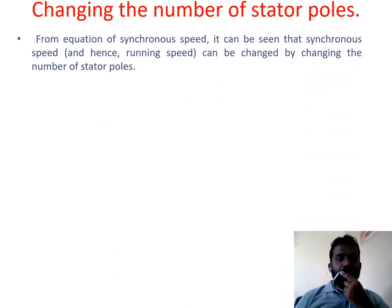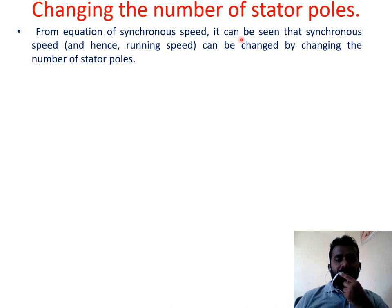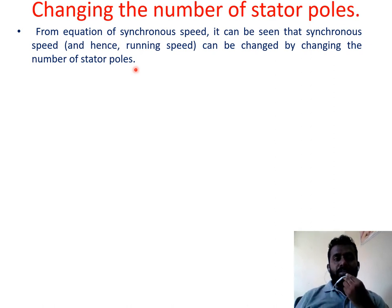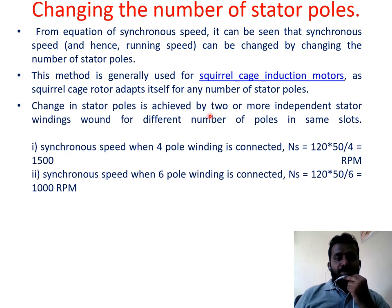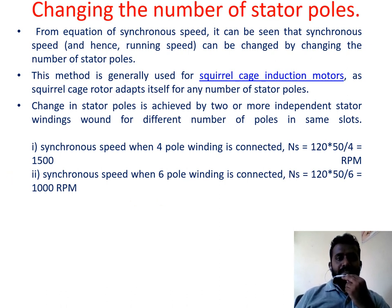Changing the number of stator poles: from the synchronous speed equation NS = 120F/P, it can be seen that synchronous speed can be changed by changing the number of stator poles P. This method is generally used for squirrel cage induction motors as the squirrel cage rotor adapts itself for any number of stator poles. Change in stator poles is achieved by two or more independent stator windings. For example, if poles = 4, speed = 1500 RPM; if poles = 6, speed = 1000 RPM.